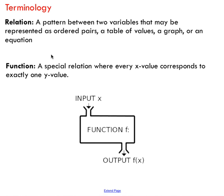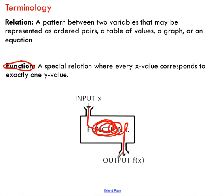From this point forward we're going to start using the word function. This is a special type of relation where every x value corresponds to exactly one y value. Pretty much the way functions work: you take some x value, you put it into your function, some stuff happens, your x value circles around, and it gets spit back out as some sort of output. The value that comes out is your y value.